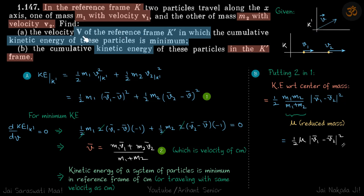We need to find the velocity v of this reference frame in which the kinetic energy of these particles is minimum. So with respect to K', if the kinetic energy of these particles is minimum, what should be v? We'll write the kinetic energy in terms of v and then differentiate to find the optimum value.